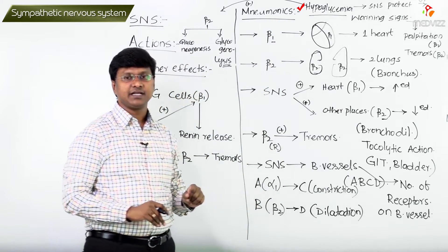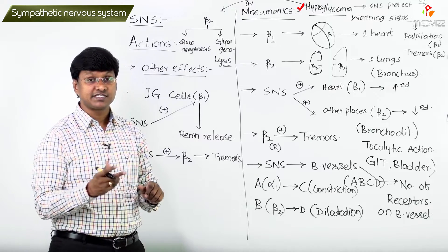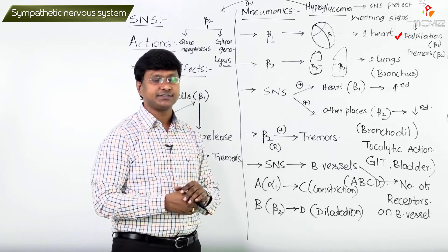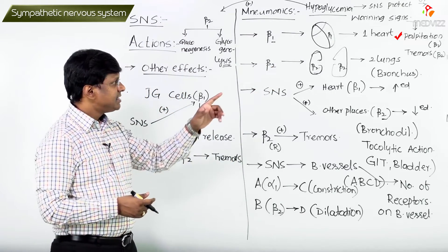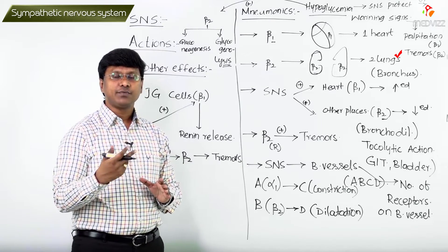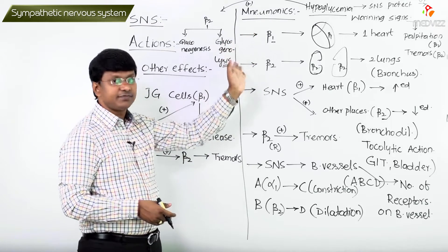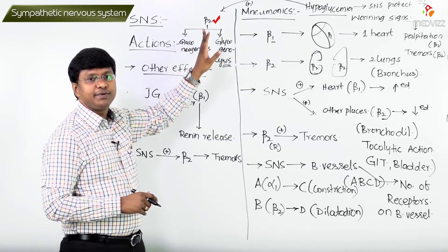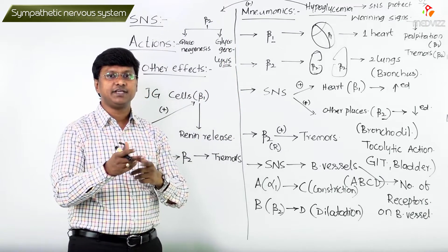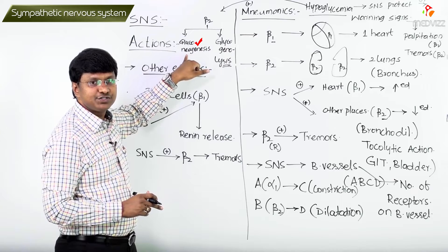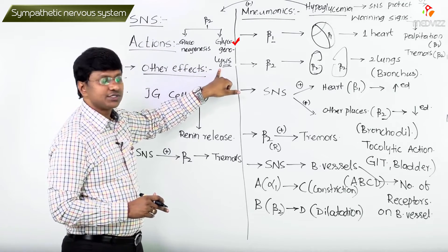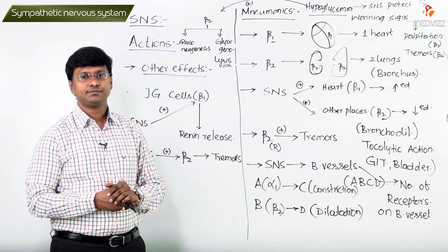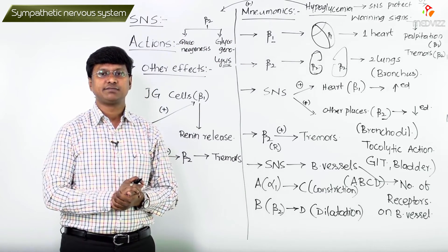During hypoglycemia — a medical emergency — the sympathetic nervous system protects the individual by stimulating warning signs: palpitations via beta-1 receptor stimulation and tremors via beta-2 receptor stimulation. Sympathetic nervous system increases blood glucose by stimulating beta-2 receptors in the liver, promoting gluconeogenesis and glycogenolysis, thereby increasing blood glucose levels.